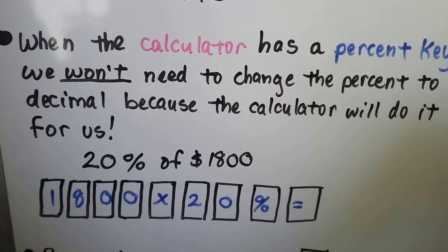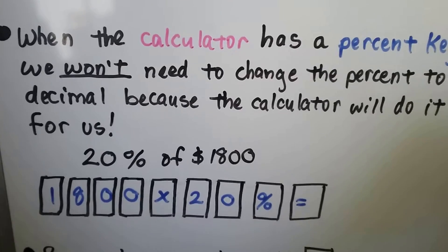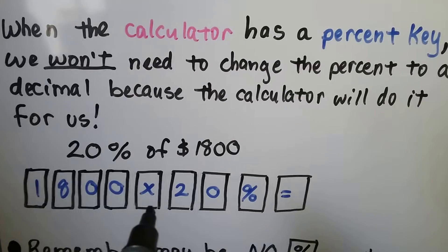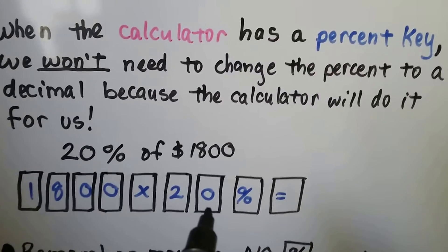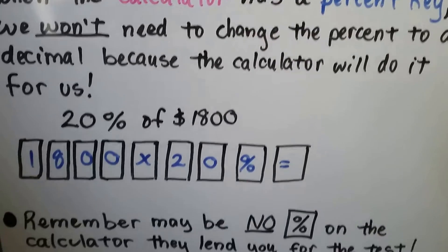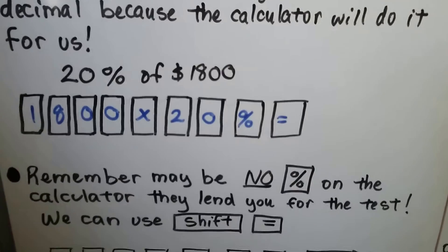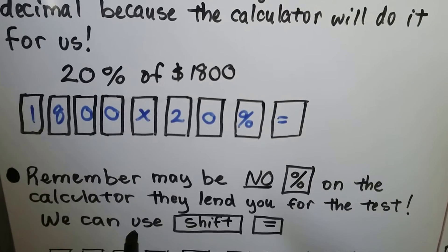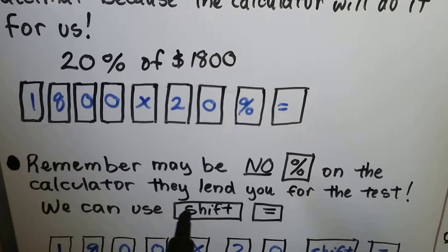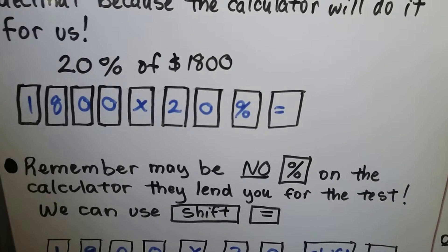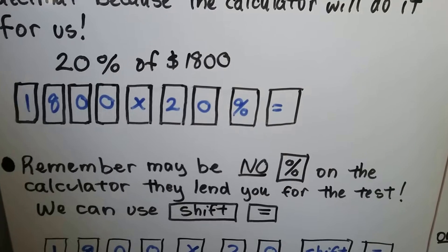20% of $1800, we would start by putting in 1-8-0-0, the multiplication sign, then 2, then 0, and then hit the percent key and equals. And it will give us the answer. And remember, there may be no percent key on the calculator they lend you for the test. You could use the shift equal keys on that Casio FX260.